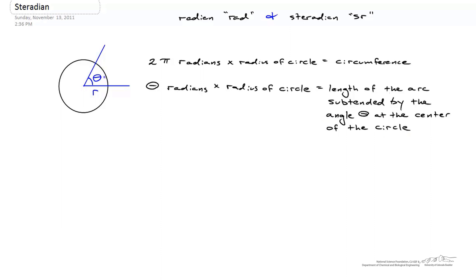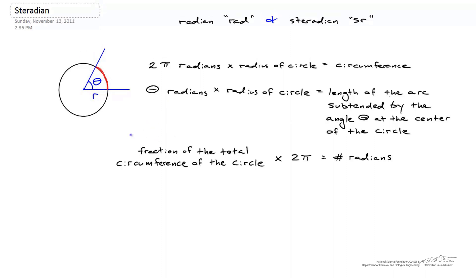The word 'subtended' means we've got an arc defined by some angle theta at the center. The length of the arc subtended by theta is shown here in red. Another way to express this is the fraction of the total circumference of the circle. If we take that fraction and multiply it by 2π, we'll come up with the number of radians for this angle. For example, this angle might be about 20% of the way around — take that 20%, multiply by 2π, and you'll get theta in radians.